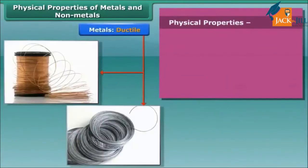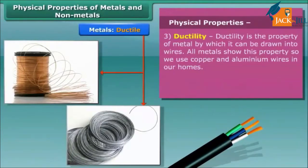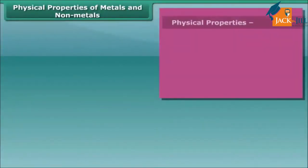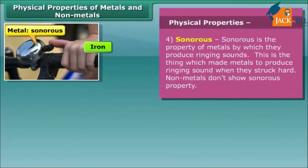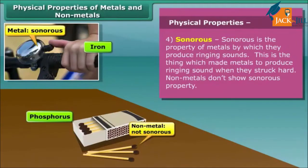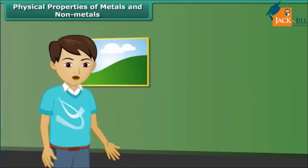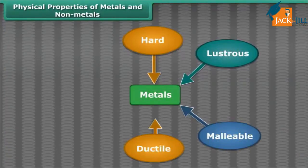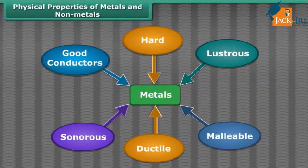The property of metal by which it can be drawn into wires is called ductility. It is the third property of metals. Non-metals don't show ductility. Now let's talk about another property of metals — that is sonorous. Metals produce ringing sounds when struck, so they are said to be sonorous. Materials other than metals are not sonorous.